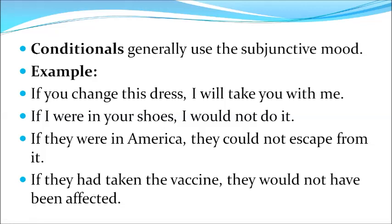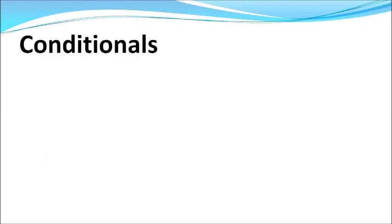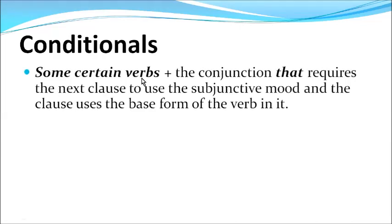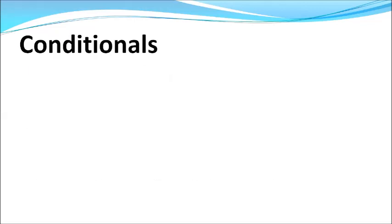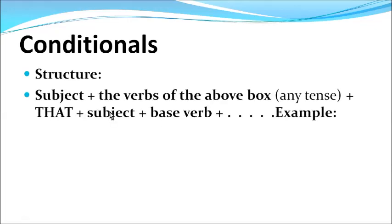In subjunctive mood, certain verbs followed by the conjunction 'that' require the next clause to use the base form of the verb. These verbs include: advise, demand, stipulate, command, suggest, decree, and others. The structure is: Subject + verb from the list (at any tense) + 'that' + subject + base form of the verb. Tense does not matter for the main verb; the following clause always uses the base form.